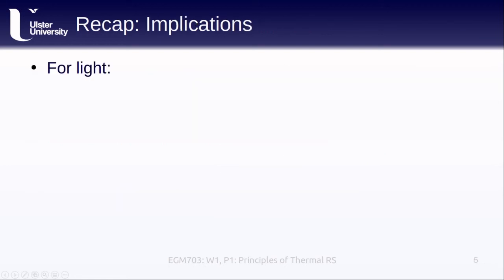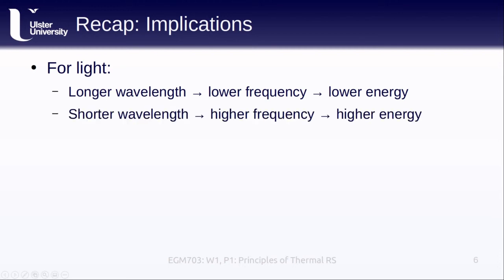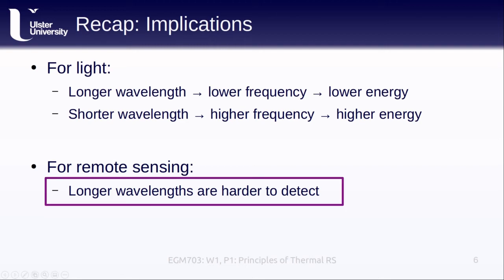Using what we know about the relationship between frequency and wavelength of light, we can rewrite this using the equation at the bottom of the slide. The energy contained in a photon is inversely proportional to its wavelength. Put slightly differently, longer wavelengths mean lower frequencies mean lower energy, and conversely, shorter wavelengths mean higher frequencies mean higher energy. For remote sensing, this also means that longer wavelengths are harder to detect — we need more photons at lower energies to strike our sensor to register a signal. This is one of the reasons why we don't see high-resolution thermal sensors.